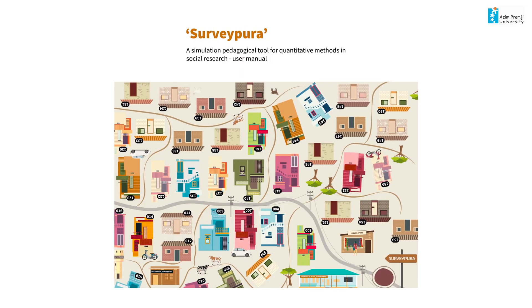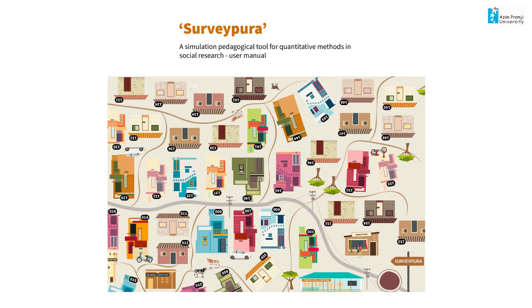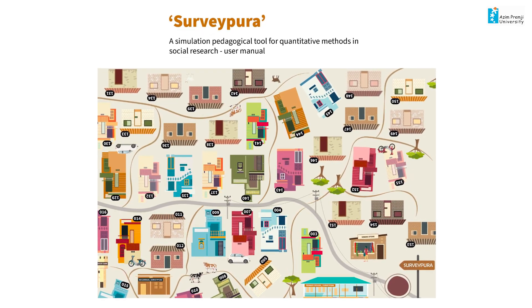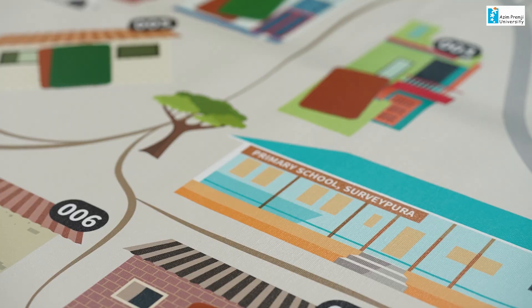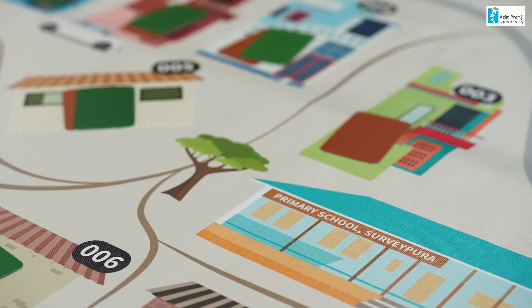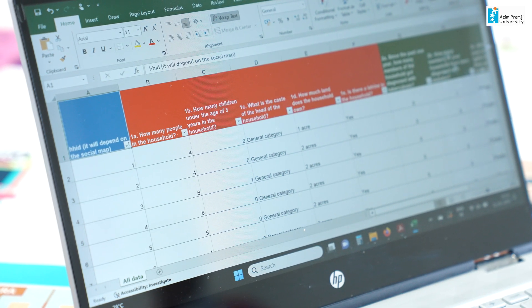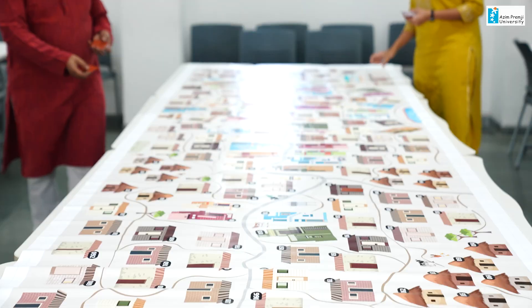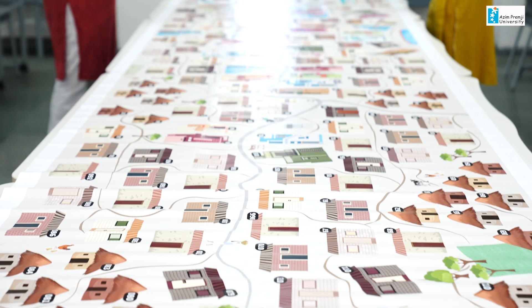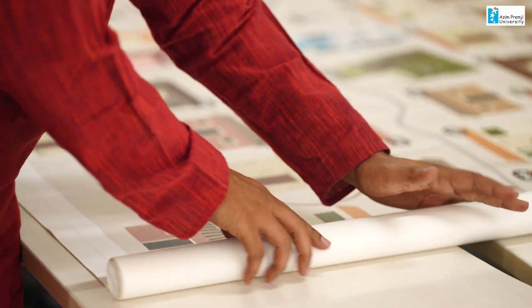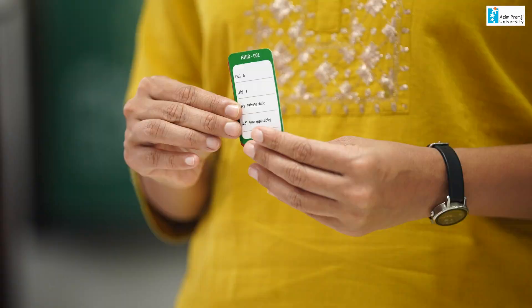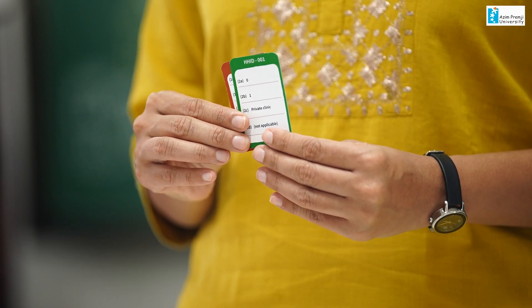The last part is the user manual of SurveyPura, which can also be used by facilitators to better understand the tool. To use SurveyPura, the instructor should first read the manual and familiarize themselves with the tool, including the village, the characteristics on the canvas, the data cards, and the spreadsheet. The village illustration is printed on a canvas measuring 16 feet by 4 feet. It can be rolled, making it easy to store and transport. The data cards are printed on 300 GSM card paper.